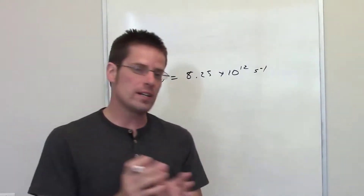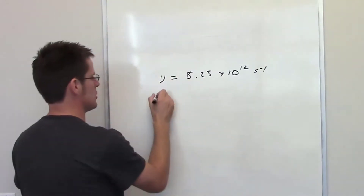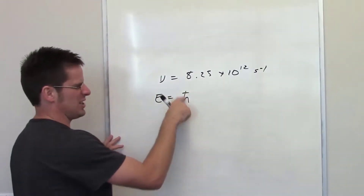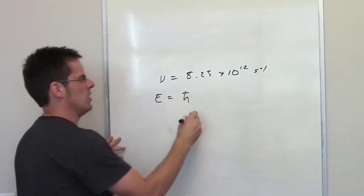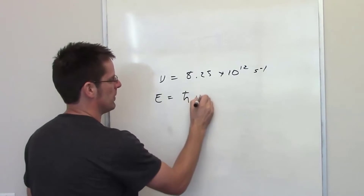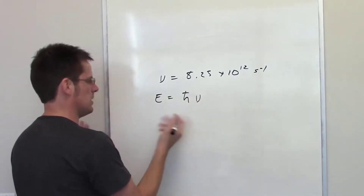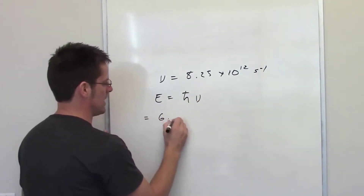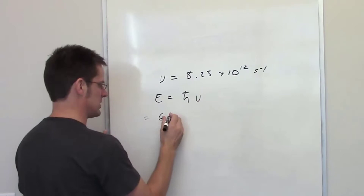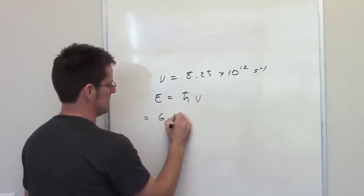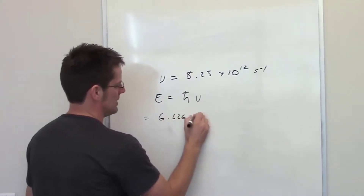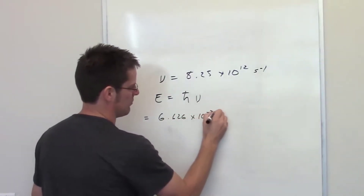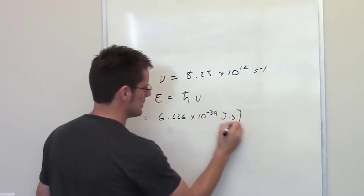Now, according to Planck's equation, energy is equal to Planck's constant — this H that has a little hat on it — multiplied by frequency. This is a really simple problem where we write down Planck's constant, which is 6.626 times 10 to the negative 34 joules times seconds.